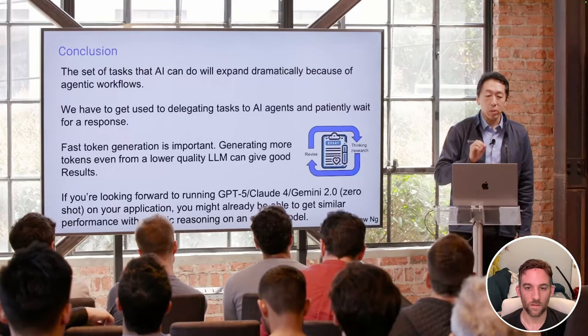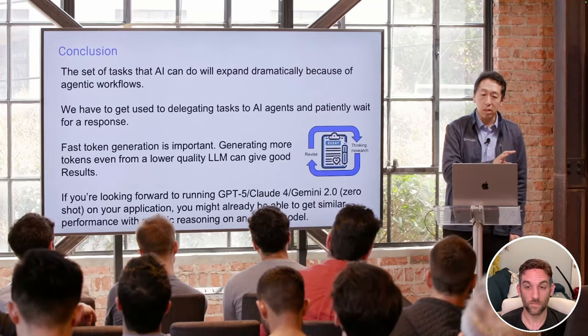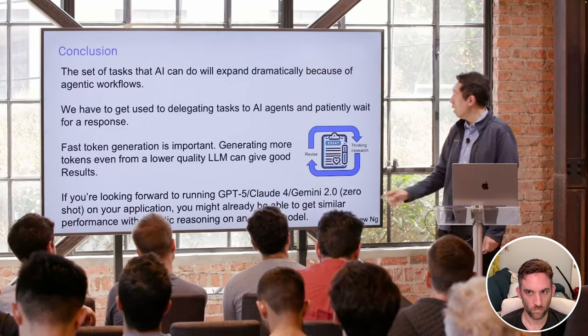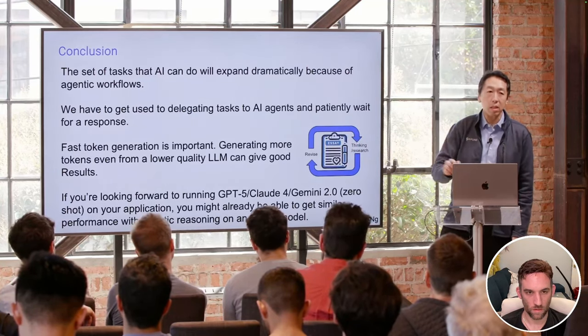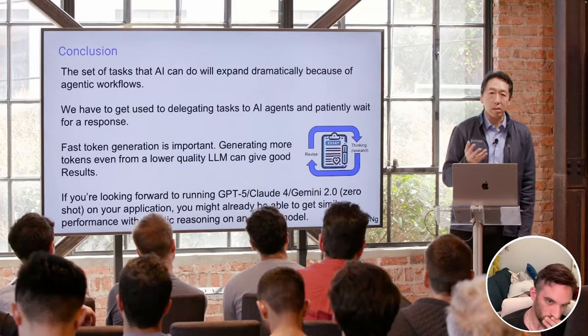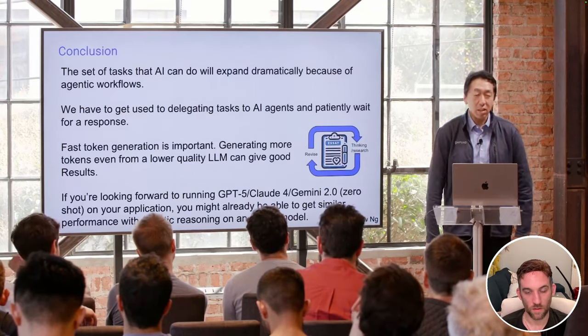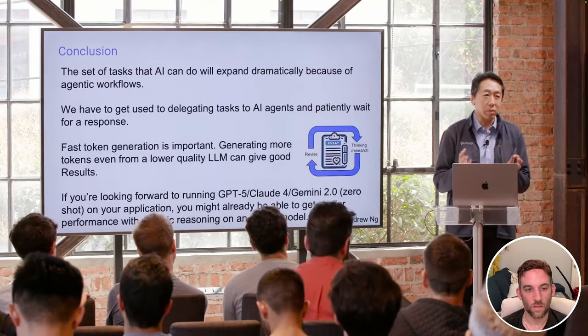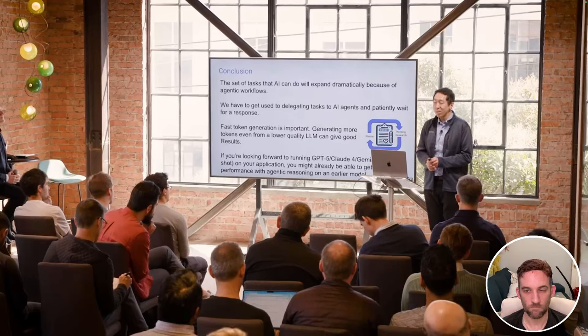Generating more tokens quickly from a slightly lower quality LLM might give better results compared to slower tokens from a better LLM. It lets you go around the agentic loop more times — similar to the results showing GPT-3.5 with an agent architecture outperforming GPT-4 zero-shot. Looking forward to Claude and GPT-5, Andrew Ng suggests you may get closer to that level of performance on some applications through agentic reasoning on an earlier model.